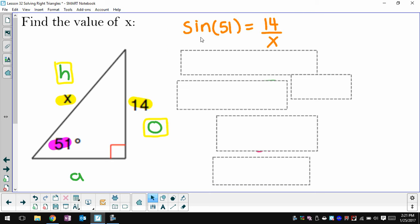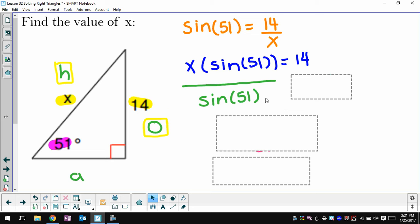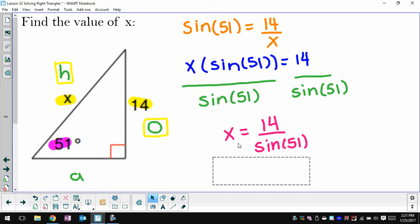So the sine of my angle, 51, is equal to the opposite side over the hypotenuse. Multiply both sides by x. Divide both sides now by the sine of 51. And I get that my missing side is equal to 14 divided by sine 51. I could plug that right side into my calculator to get the side to be approximately 18.01.